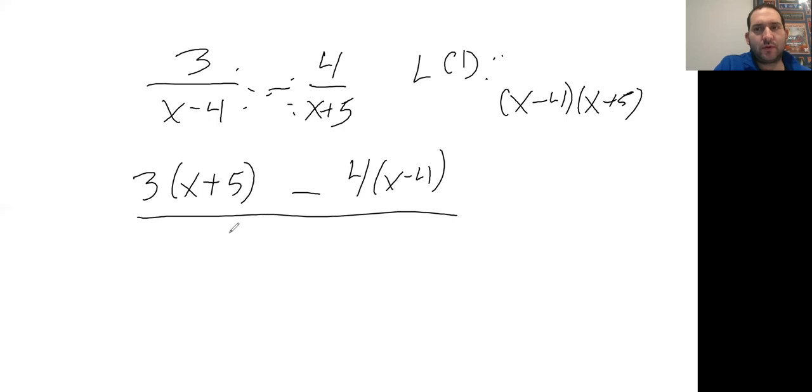My denominator is going to be the two binomials written together: (x-4)(x+5). Notice I just put it all as one fraction this time. Last problem I did two separate fractions; this problem I did one fraction. Either way is fine. This is definitely a good way to do it.